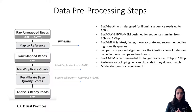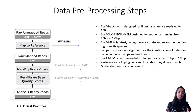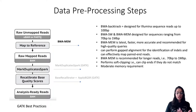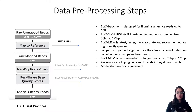For data pre-processing, we start with raw unmapped reads in FASTQ files and first perform quality control — making sure there are no adapter sequences, and if there are, trimming them out. Once quality control checks out, we move on to mapping these reads to a reference genome.